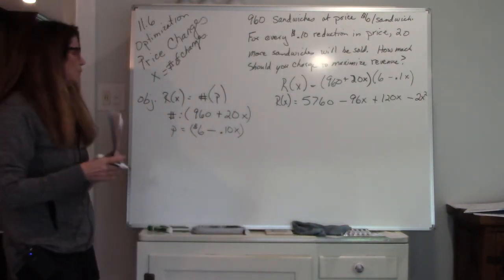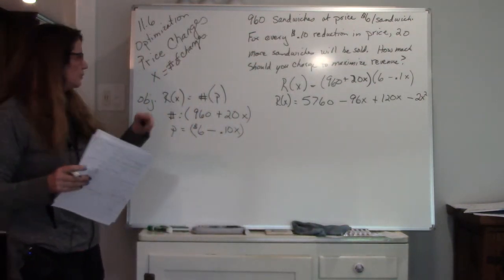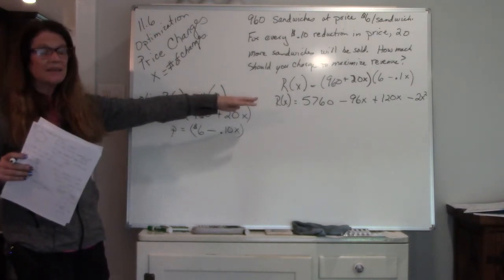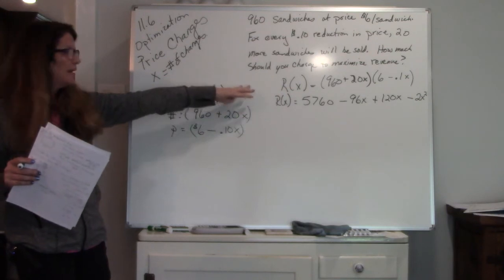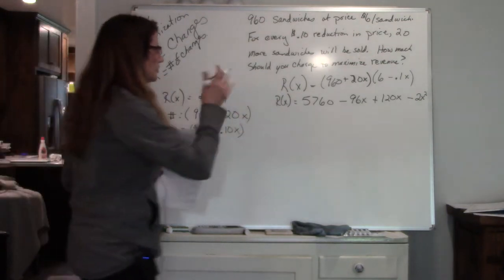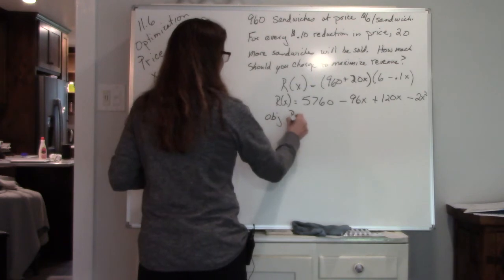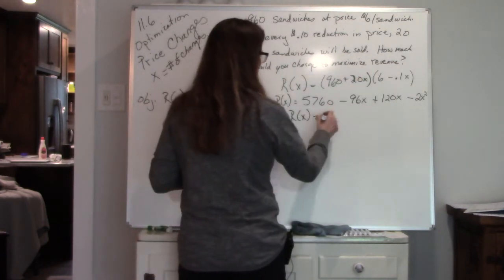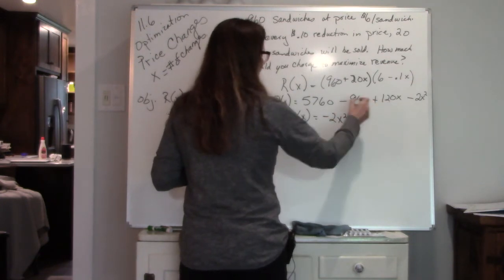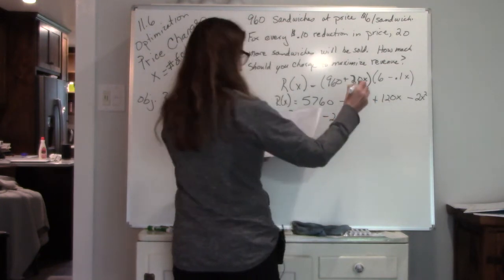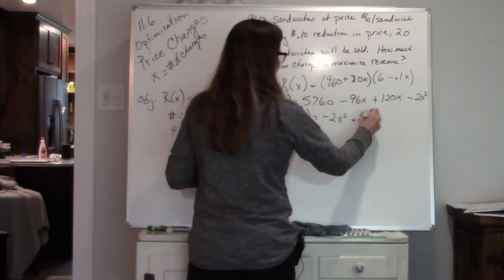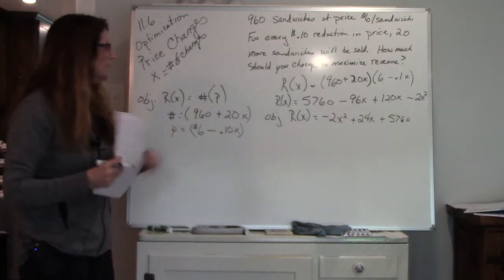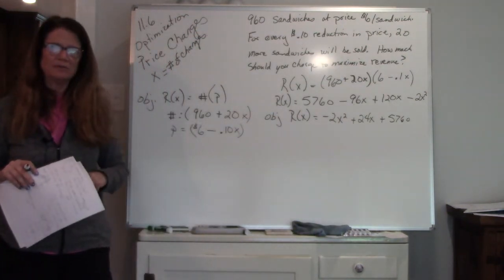Now, one thing that we didn't do, which we have done in the past, is the only thing I'm getting right now is the objective. That's all I've done so far, and I'm not even done yet. So we're still just looking for our objective. Our objective is our revenue function. So again, I'm going to rearrange this so it's in descending order. 120x minus 96x is 24x, plus 5760. So all I did is I rearranged it. Now I have my objective.